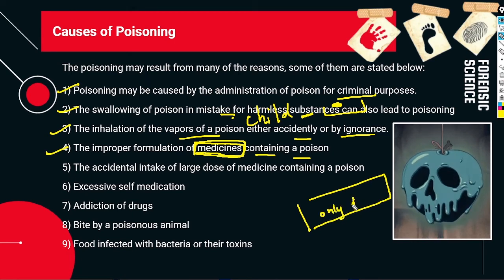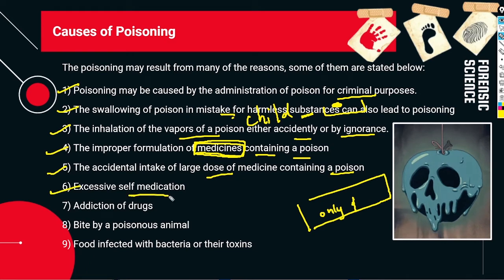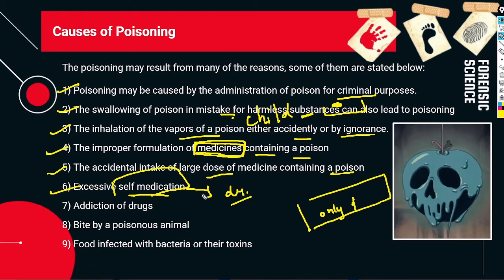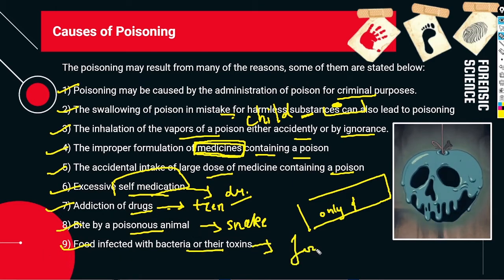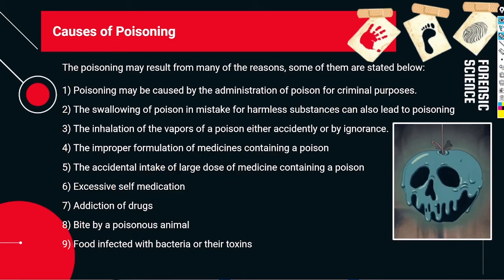Some medicines are marked 'only as advised by doctor' because they have poisonous effects — it is very important not to take medicines on your own. Other causes include accidental intake of a large dose of medicine containing a poison, excessive self-medication, addiction to drugs, bites by poisonous animals like snakes or scorpions, and food infected with bacteria or their toxins — which is food poisoning, increasingly common due to fast food.